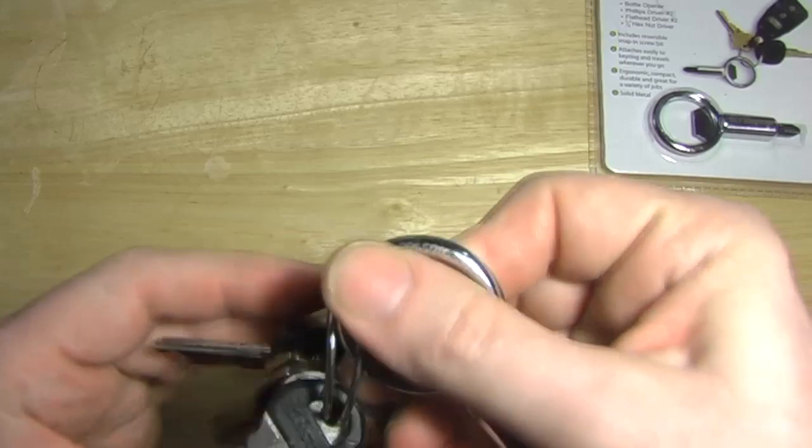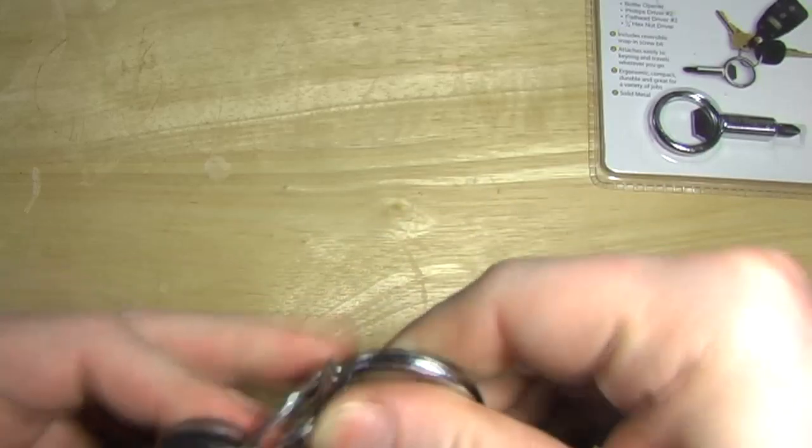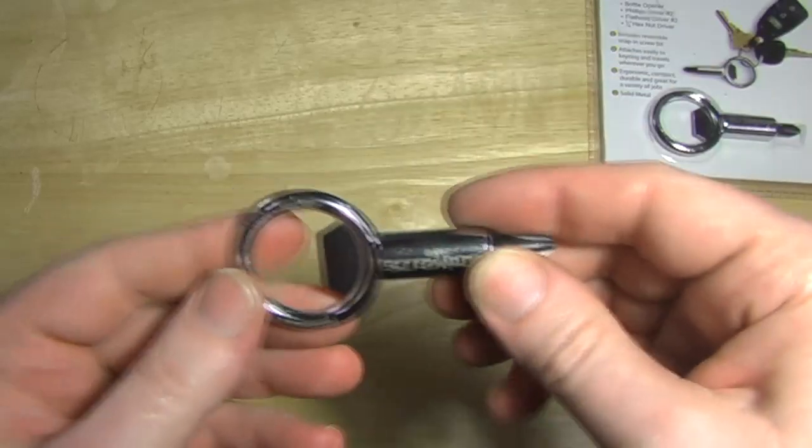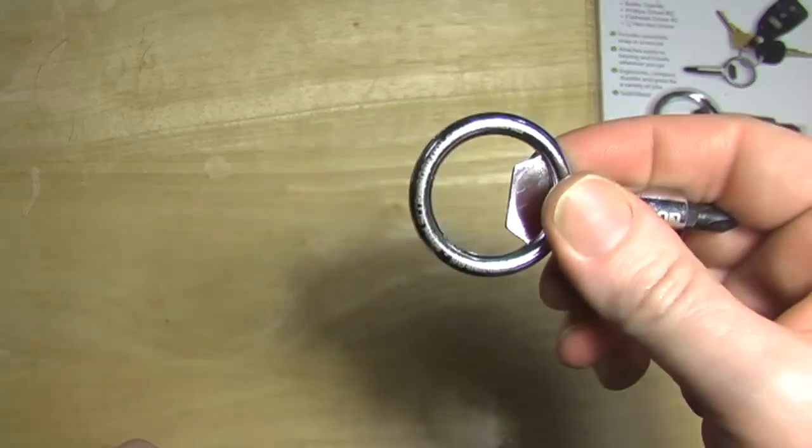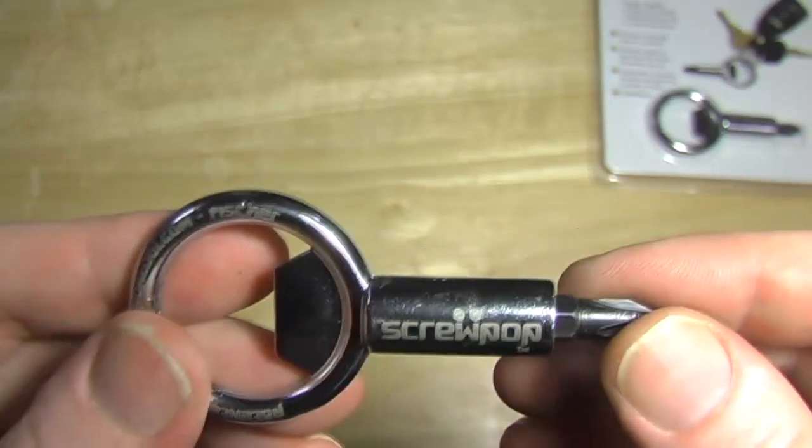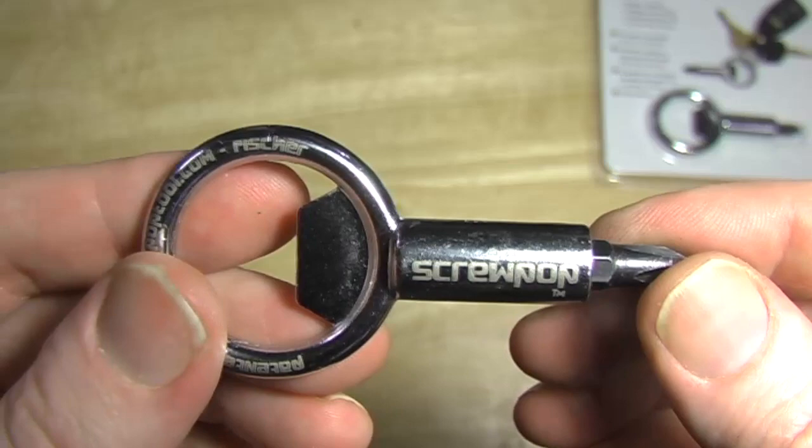Let's take it off my keychain. It fits very nicely on your keys. Let's take it off there for a second. Look at it. It's a bottle opener obviously. It has the Screwpop logo right there on the side of it there.